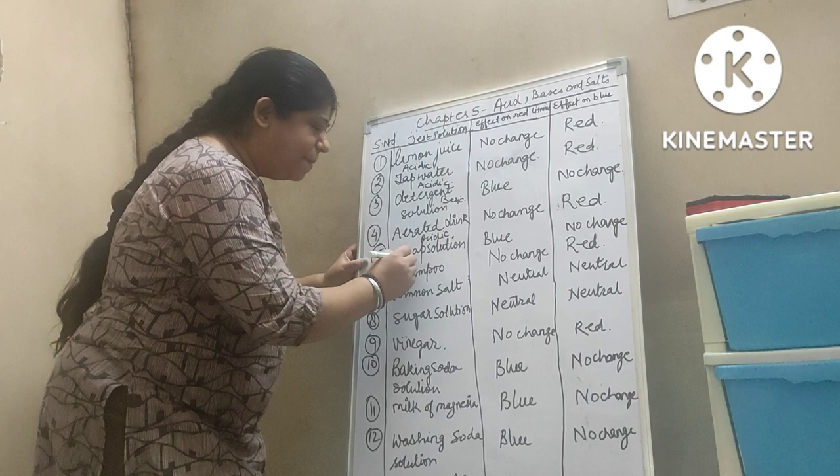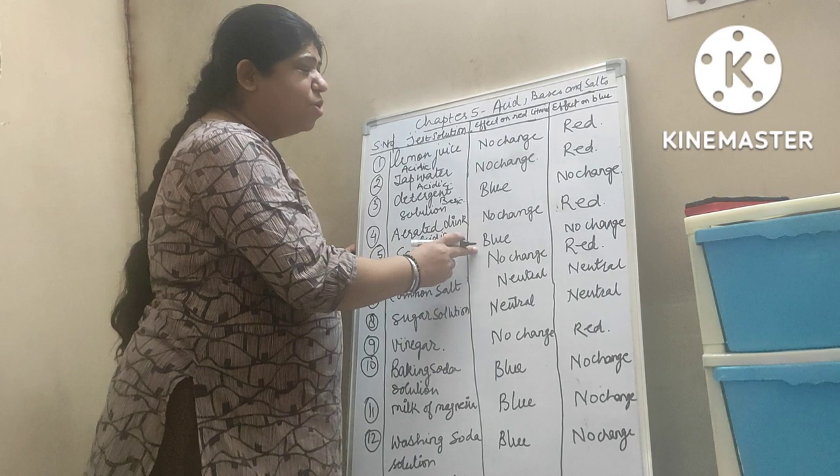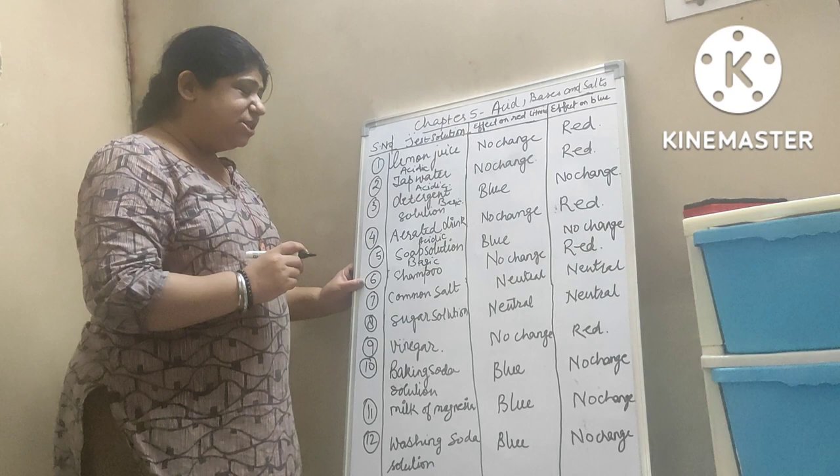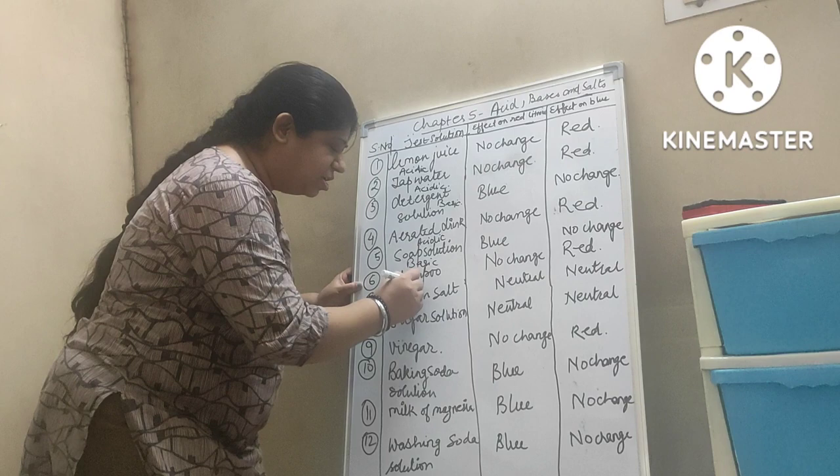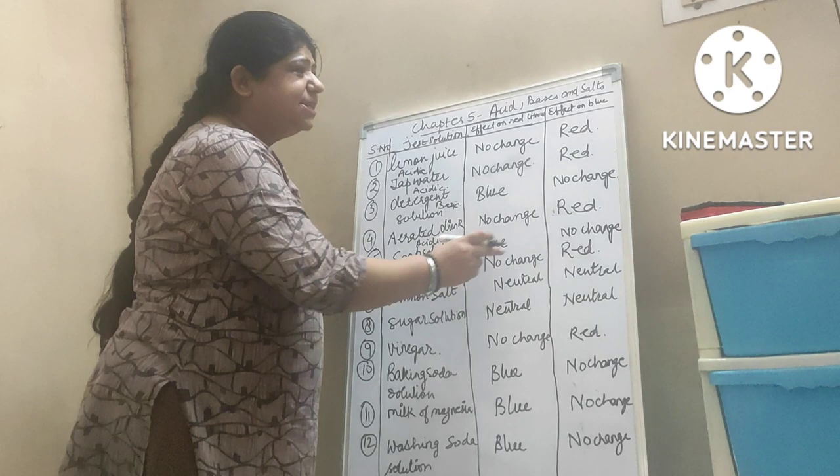Soap solution, as you all know, is basic in nature. It will turn the red litmus paper blue and in blue it will give no change. Shampoo — you people will think that it is basic in nature, but no, it is acidic in nature. So in red litmus paper no change, and in blue litmus paper it turns red.